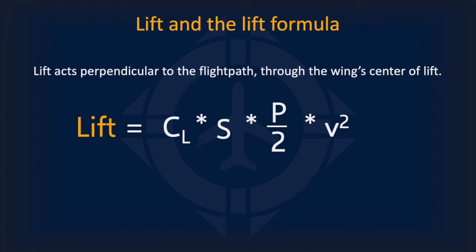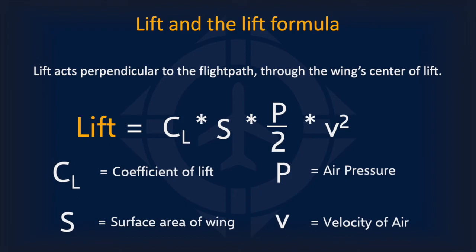To supplement these ideas, here is the lift formula, which calculates the magnitude of the lift vector. The direction of lift is always perpendicular to the flight path, through the wing's center of lift — similar to how the weight vector goes through the plane's center of mass. The formula shows the relationship between lift and four variables: the coefficient of lift (which accounts for the angle of attack), the surface area of the wing, the air pressure, and the velocity of the air. The coefficient of lift and the velocity are directly proportional to lift generated. This is how an airplane opposes weight, by generating lift through the downward turning of air by its wings.